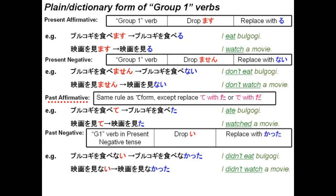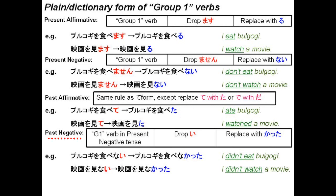To put it into the past affirmative, it's the same rule as the te form, only that instead of using te we use ta, or where you would have de you would use da. For example, tabete becomes tabeta, mite becomes mita, or oyoide becomes oyoida. To put a verb into the past negative, we replace the i with katta. So tabenai becomes tabenakatta, minai becomes minakatta.